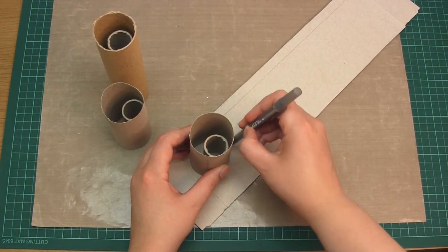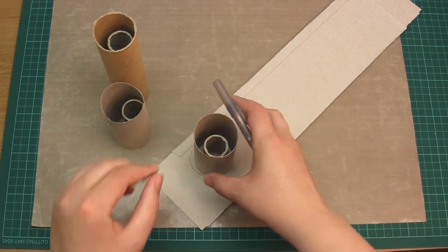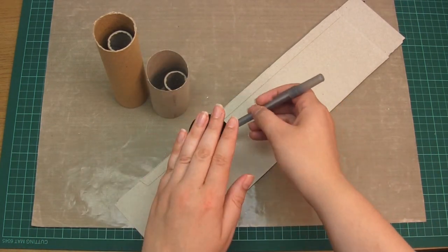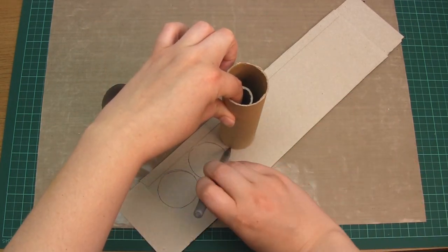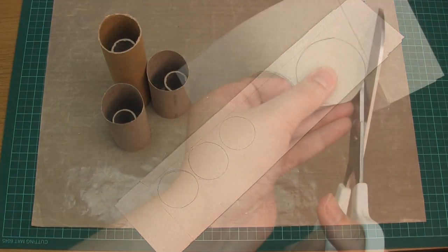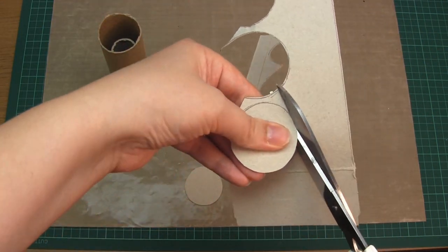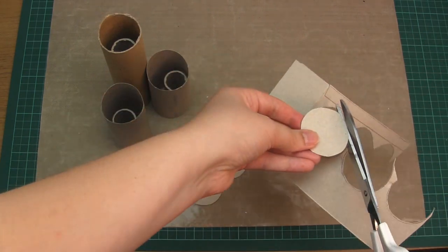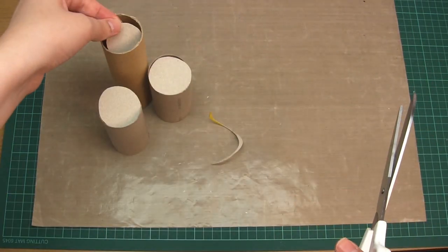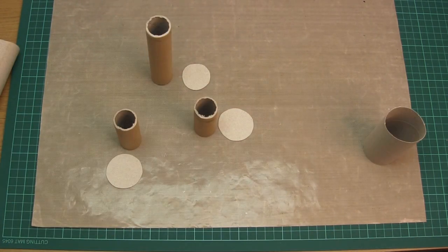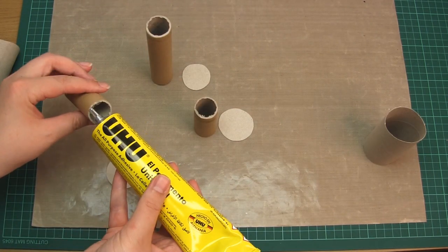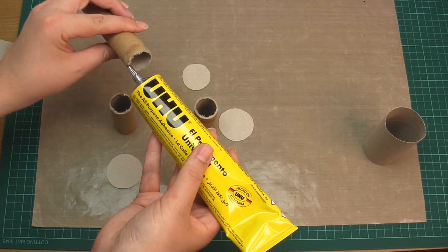Cut circles from thin card that fit inside each tube. Glue these to the top of the corresponding platforms and leave them to dry.